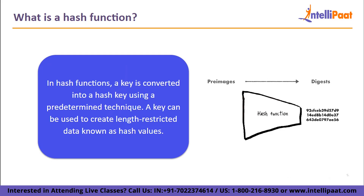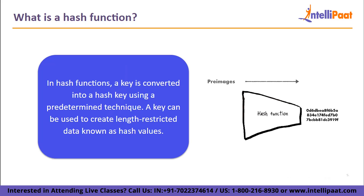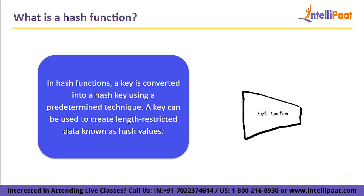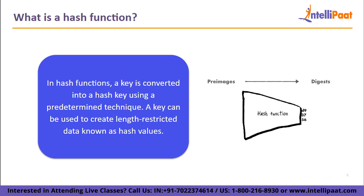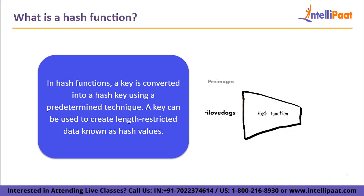What is a hash function? In hash functions, a key is converted into a hash key using a predetermined technique. A hash key can be used to create length-restricted data known as hash values. The original character sequence is still reflected in the hash value even if it is often less than the original. The recipient gets both the hash value and the digital signature after the transfer. The hash value produced by the receiver and the one obtained along with the message using the same hash technique are compared. If the messages' hash values perfectly match, they can be forwarded without any issues.